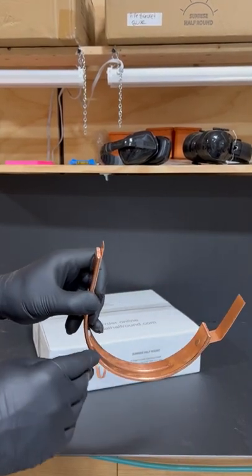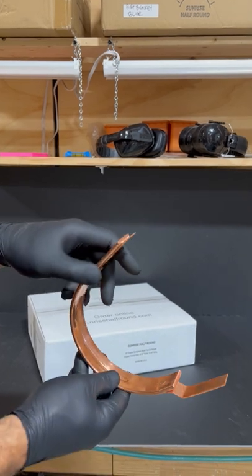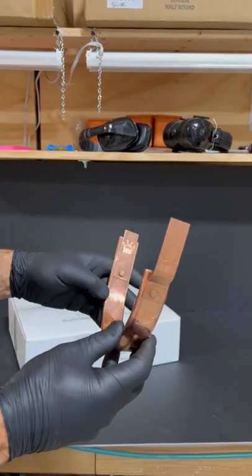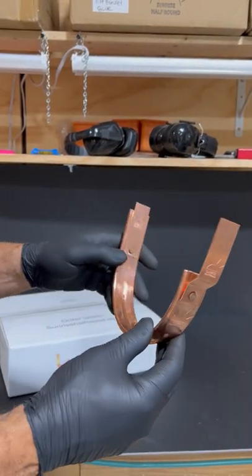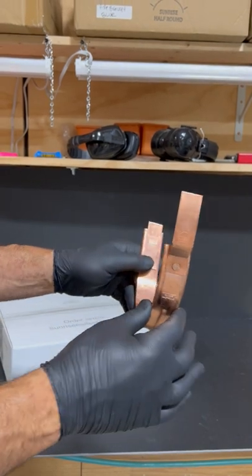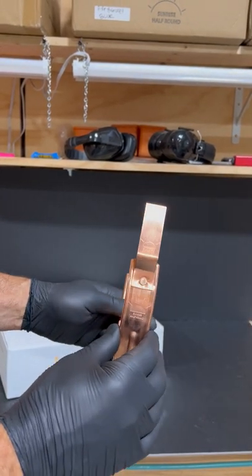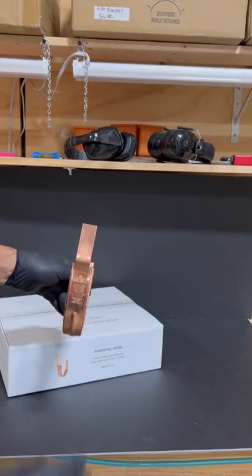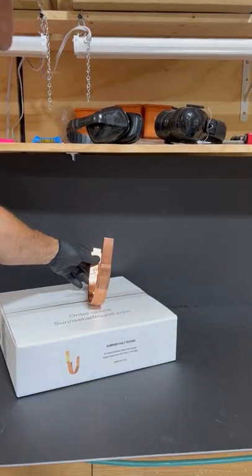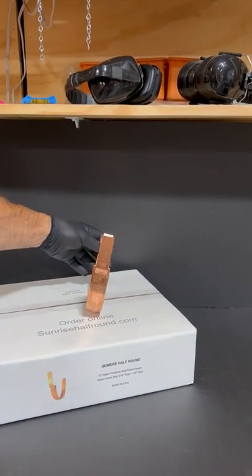Perfectly rounded edges, countersink holes for the rivets, so it won't dent your gutters if you need to move the brackets right and left for any adjustments after you install it on the gutters. Available on my website, sunrisehalfround.com.